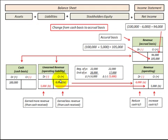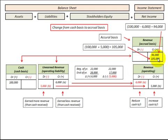Looking at our first case with unearned revenue: we have a credit balance of $6,000 in unearned revenue and a debit balance of $100,000 in cash. Our balancing entry to accrued revenue would be $94,000 — that's the $100,000 debit balance in cash minus the $6,000 credit balance in unearned revenue. In the second case, we have a debit balance of $5,000 in unearned revenue and a debit balance of $100,000 in cash. Our balancing entry for accrued revenue would be $105,000 — the $100,000 plus the $5,000 debit balance in unearned revenue.